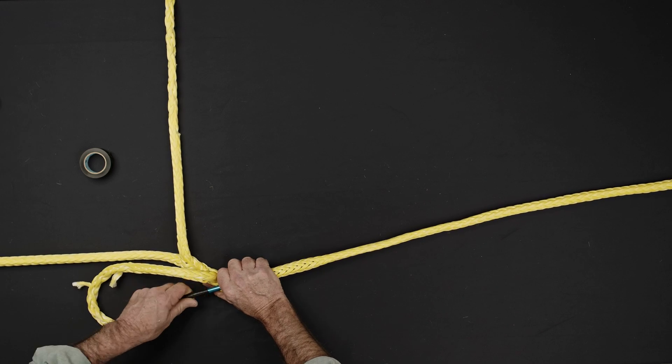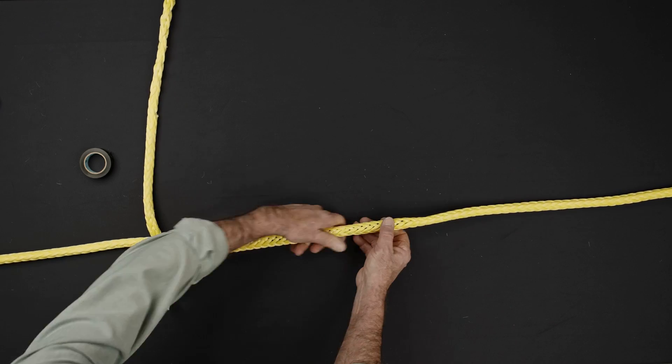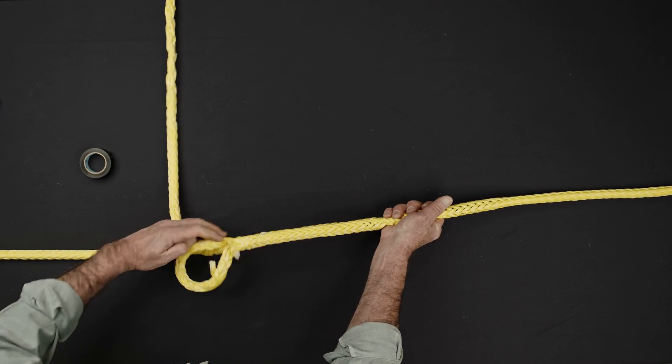Complete the first half of the splice by inserting the fit into the hollow center of the rope 3 picks down from the previous brummel. Continue working the fit down the length of the rope until the entire tail is buried.